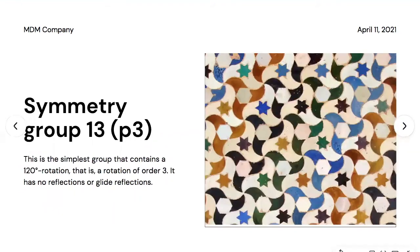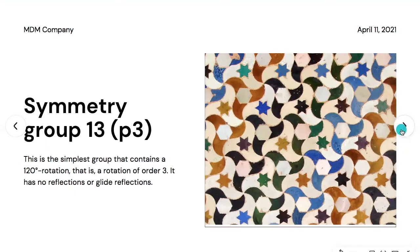Symmetry group thirteen is named P3. This is the simplest group that contains a 120-degree rotation — that is, a rotation of order three. It has no reflections or glide reflections. Moving on to symmetry group fourteen, named P31M: this group contains reflections whose axes are inclined at 60 degrees to one another, and rotations of order three. Some centers of rotation lie on the reflection axes and some do not. There are also some glide reflections.